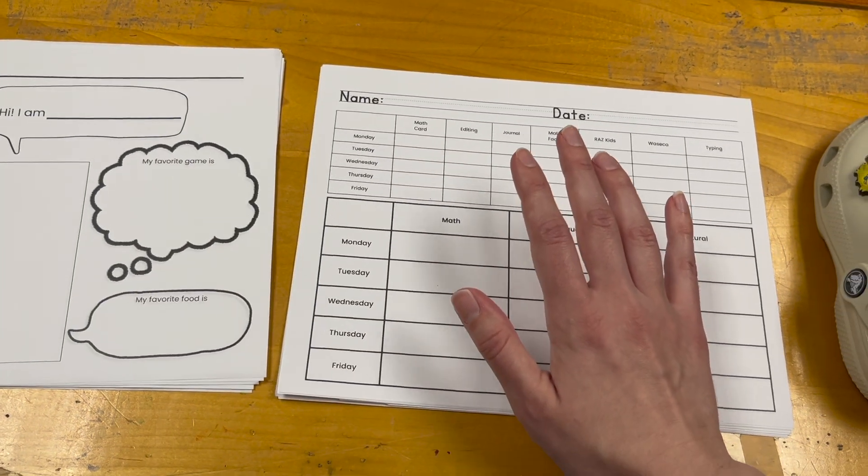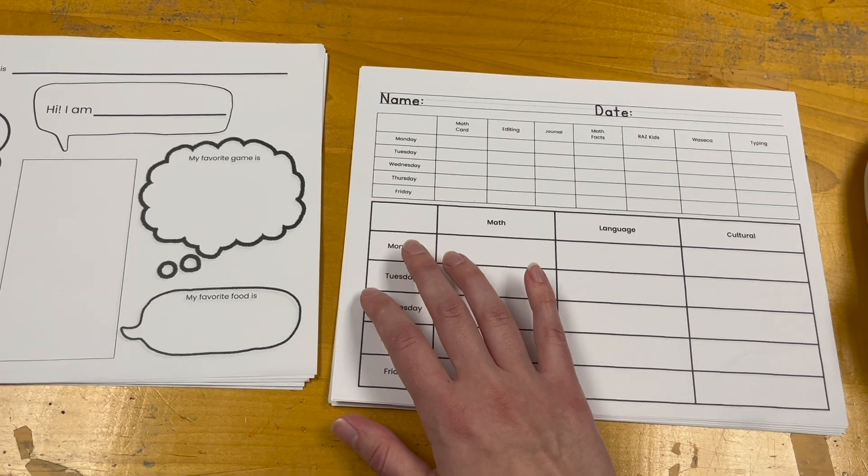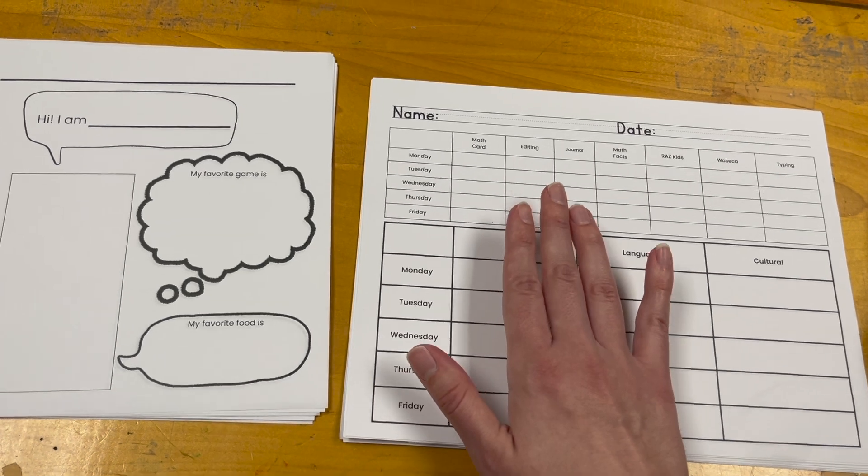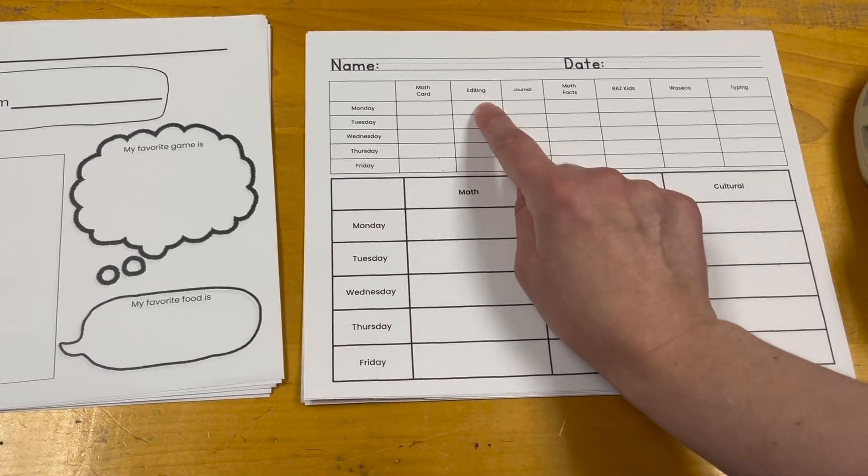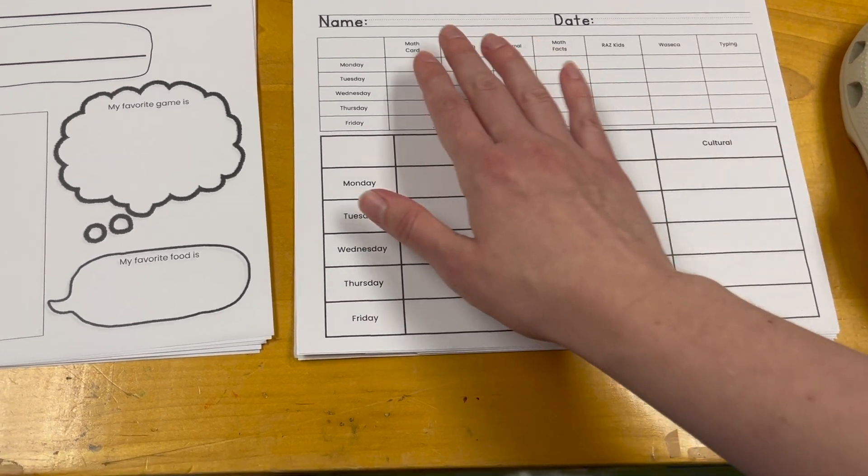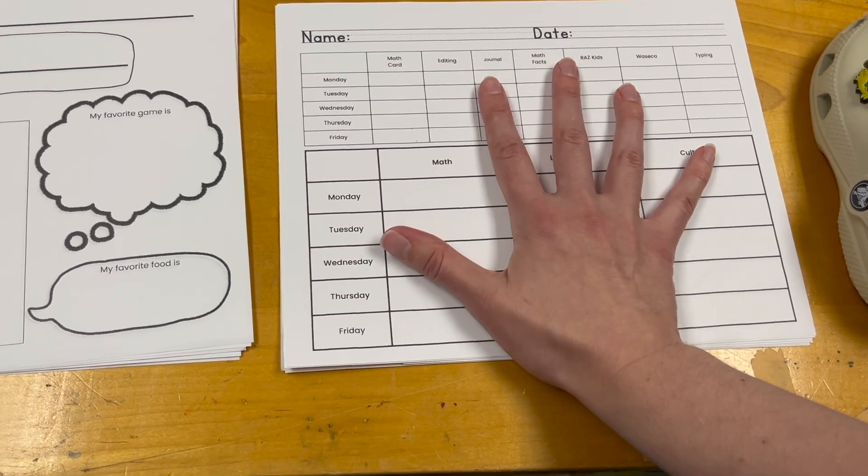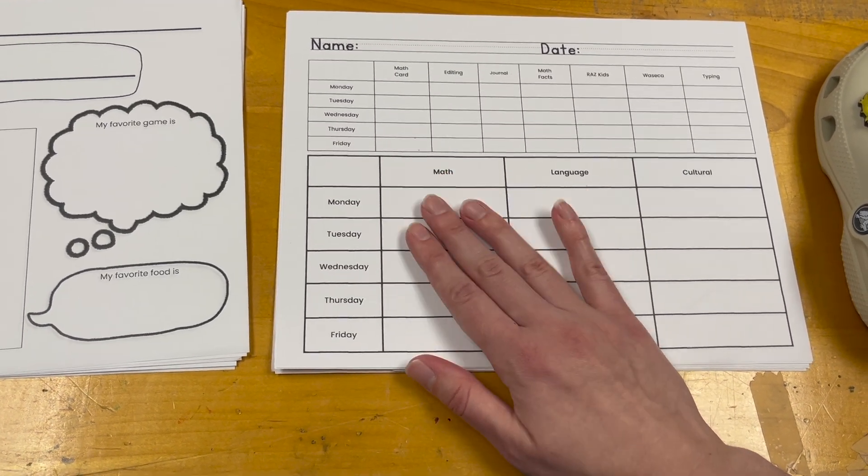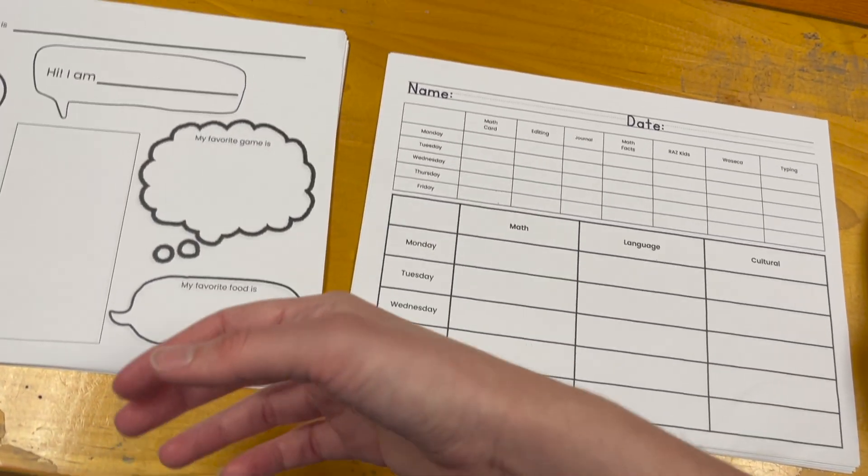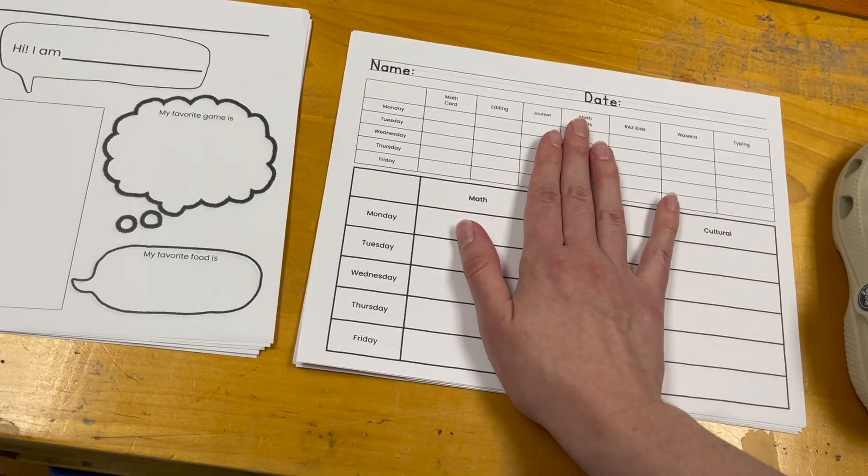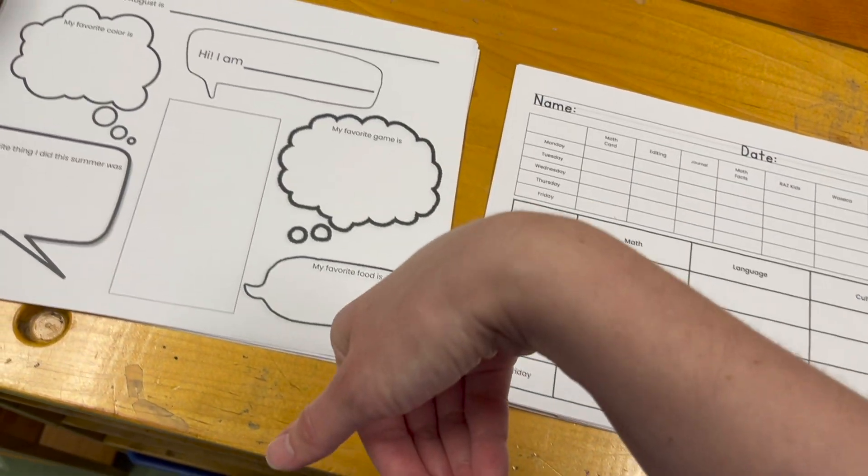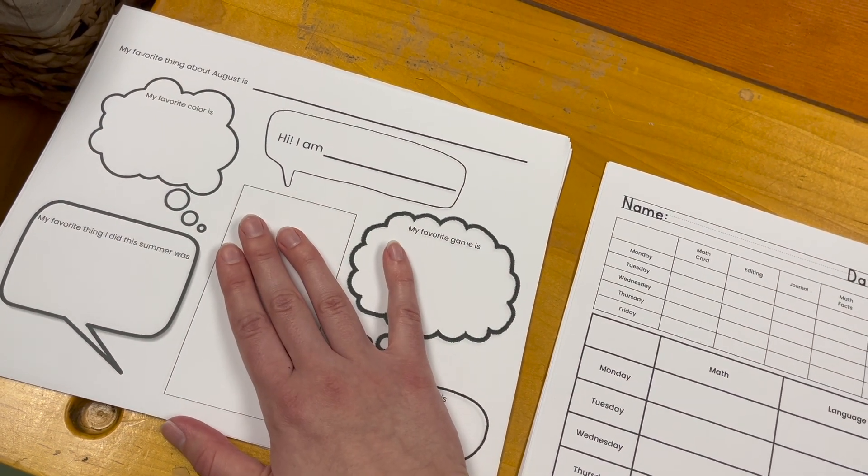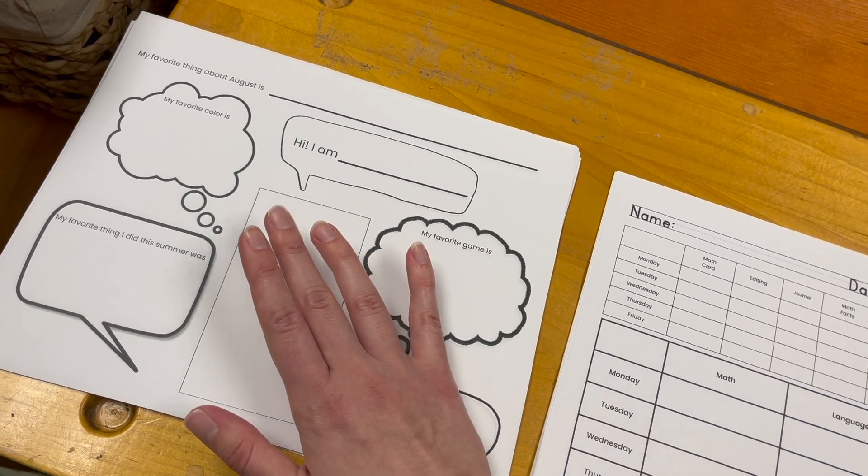And then we'll talk about the work plan. We might do the tour and then the work plan. We'll just have to see. But then the work plan, I will go through and we will practice doing each one of these things. But we're not starting any actual work. We're just going through this. And then I will show them their portfolio. So they can color their portfolio page. That goes in the front of their binder. And then I'll read with them. We'll have a snack. And then we'll do this activity.